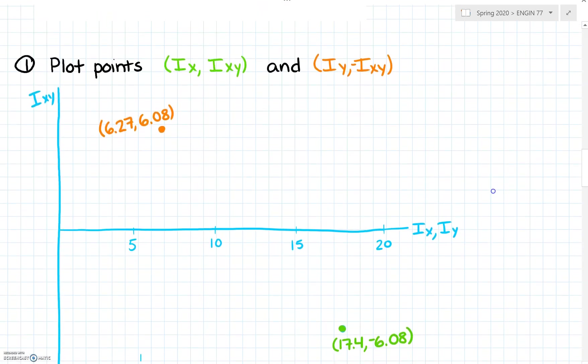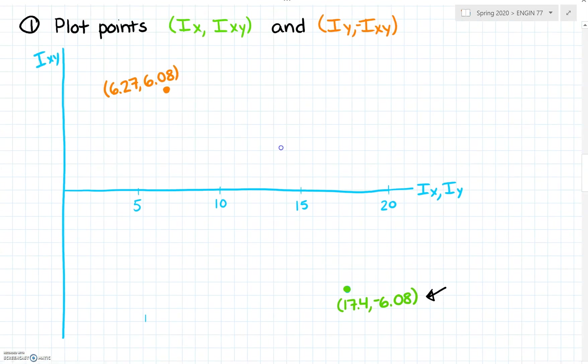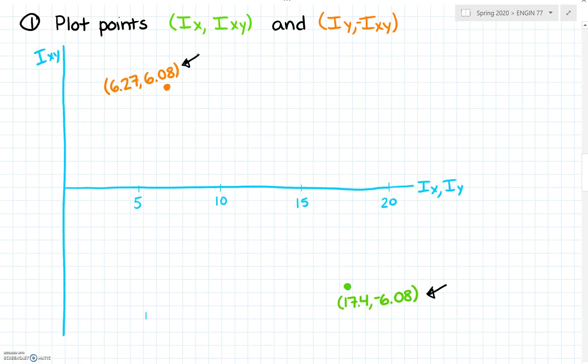The first step of our Mohr's circle is to plot the points Ix and Ixy, so that's this green point here, and Iy and negative Ixy, that's this point up here. We're just going to plot those points on axes here. On the x axis we have Ix and Iy, and on the y axis we have the product of inertia.